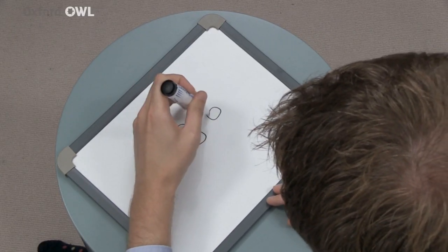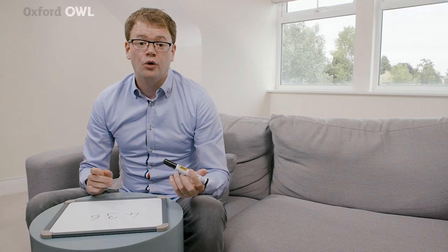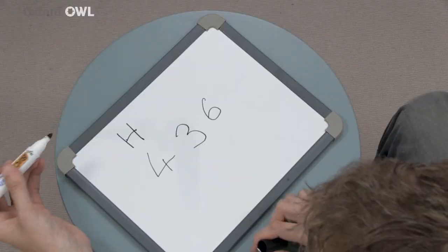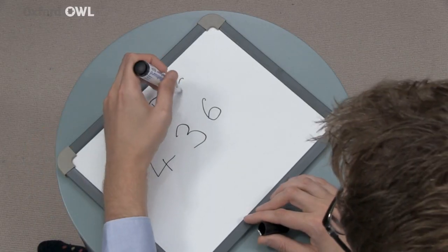Place value simply means that the position of a digit in a number shows its value. If we look at the number 436, we can see that the digit 4 is in the hundreds place, which means it has a value of 4 lots of 100 — 400. The digit 3 is in the tens place, which means it has a value of 3 lots of 10 — 30. And the digit 6 is in the ones place, which means it has a value of 6 lots of 1 — 6.